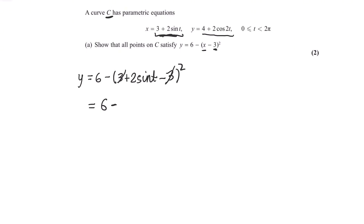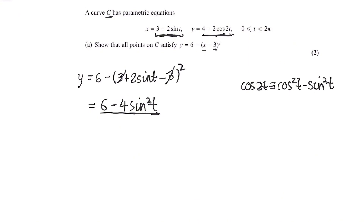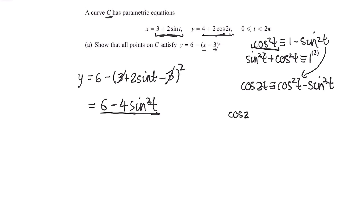So now we're left with 6 minus 2 sine t, all squared — so 6 minus 4 sine squared t. Now, it's not in the form we want because y is equal to this, so we just need to prove that these two are actually the same thing. We want to find a way to link sine squared and cos 2t. There is a formula for this: the double angle formula for cos. So cos 2t is equivalent to cos squared t minus sine squared t. We can write this in terms of sine squared t using the identity cos squared t plus sine squared t equals 1, which rearranges to give cos squared t equals 1 minus sine squared t. Substituting in, we get cos 2t equals 1 minus 2 sine squared t.